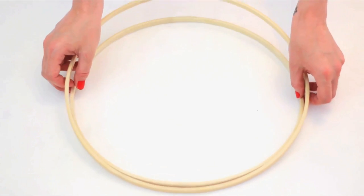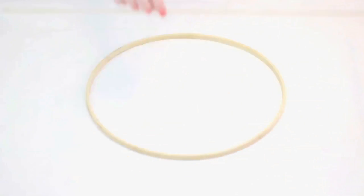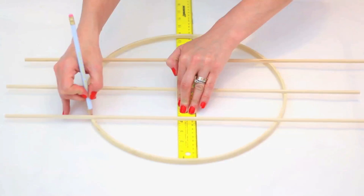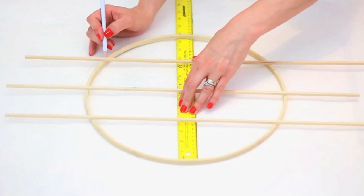Separate your hoop and keep the solid circle. Use three dowels to divide the circle into fourths. Mark the placement on your circle in pencil.